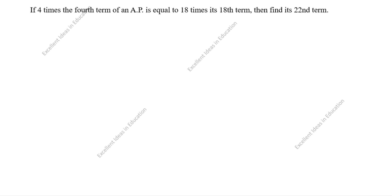Today we are going to solve this arithmetic progression problem. If 4 times the 4th term of an AP is equal to 18 times its 18th term, then find its 22nd term.